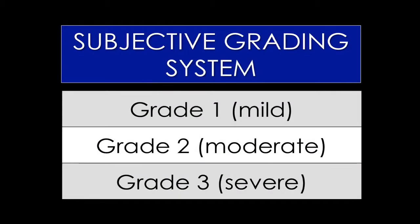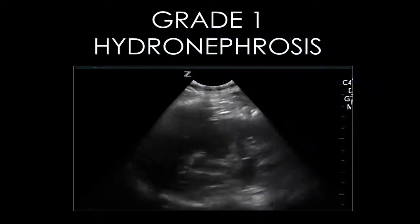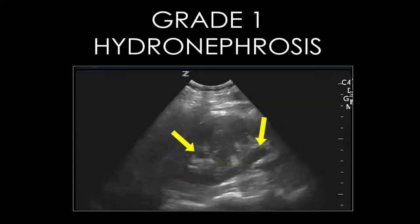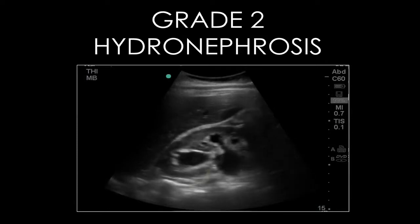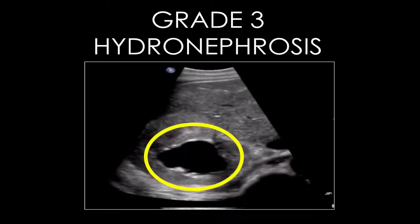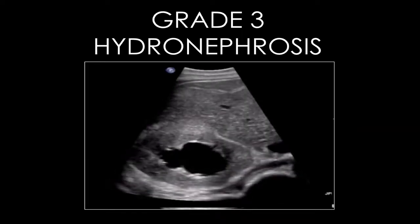A subjective grading system is sometimes used to describe the extent of the hydronephrosis, with grade 1 being mild and grade 3 being severe. This video demonstrates grade 1 hydronephrosis, where there are collections of urine separated by renal tissue. With grade 2 hydronephrosis, the renal pelvis and major calyces are confluent. Grade 3 hydronephrosis demonstrates extensive compression of renal tissue due to prolonged high pressure in the renal collecting system.